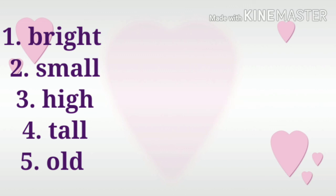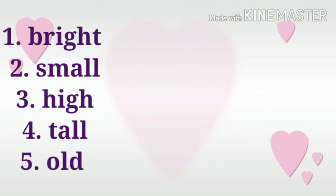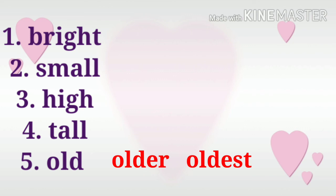Number four: the adjective is tall. The comparative of tall is taller, while in the superlative degree the word is tallest. So: tall, taller, tallest. Number five: the adjective word is old. In the comparative degree it becomes older — we add ER at the end of the word old. Then in the superlative degree it becomes oldest — we add EST at the end of the word. So: old, older, oldest. Who got five?